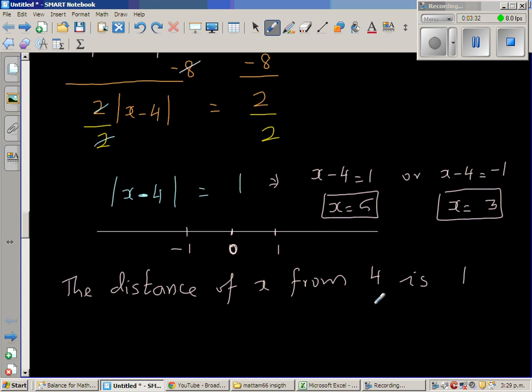Now you may wonder, how can you write like this? Suppose, let me take a very simple example. Say, 9 minus 4 is 5. So can I say the distance of 9 from 4 is 5? So let me draw a number line quickly. So this is your 9, this is your 4, and this is your 9. So this distance is 5. Can I say the distance of 9 from 4 is 5?